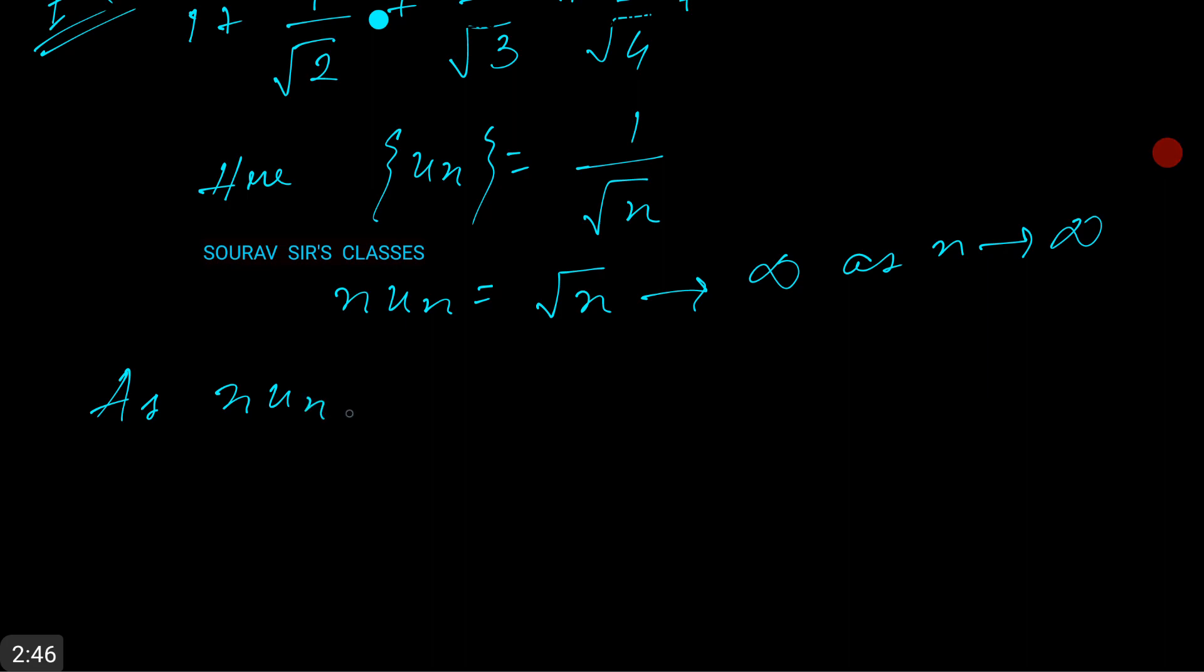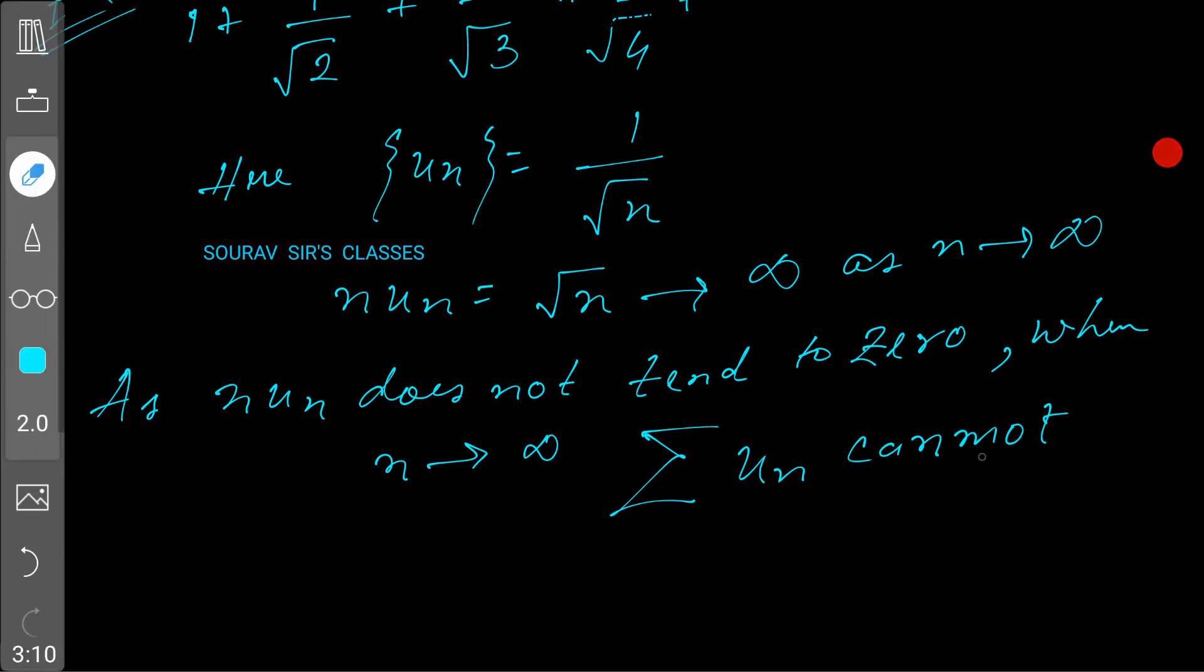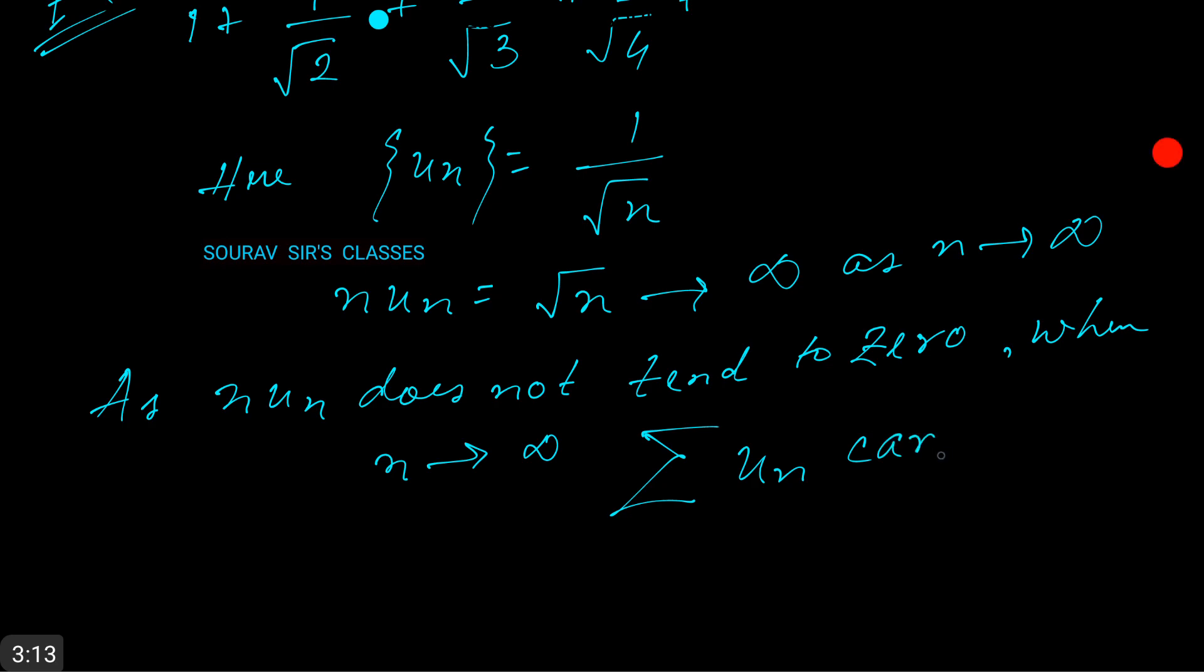Now write: as n*un does not tend to 0 when n tends to infinity, the series Σun cannot be convergent.